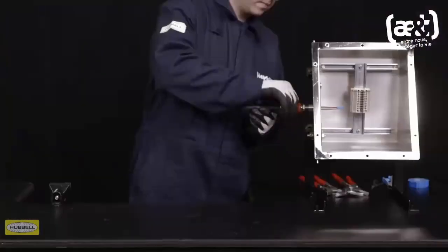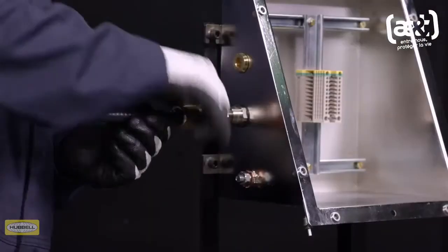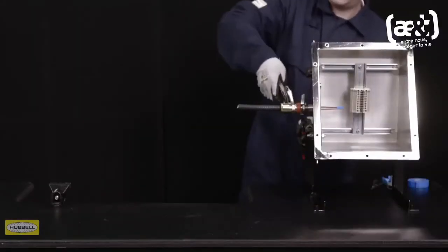Slide the cable through the entry until the pot is seated in the entry. Hand tighten the middle nut to the entry and add a fifth to a quarter turn with the wrench.